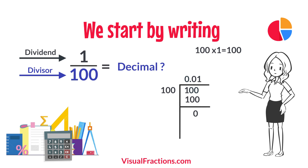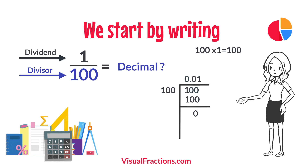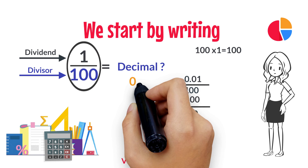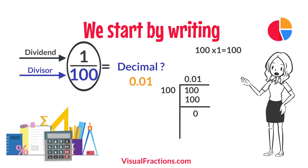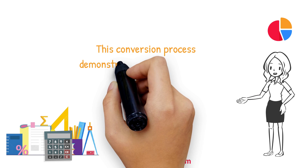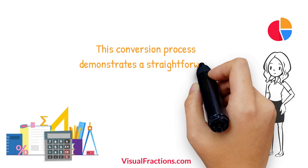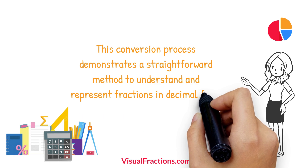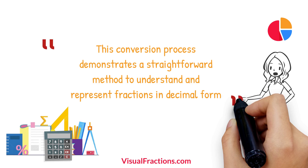So, there we have it. The fraction 1/100th converted to a decimal is 0.01. This conversion process demonstrates a straightforward method to understand and represent fractions in decimal form.